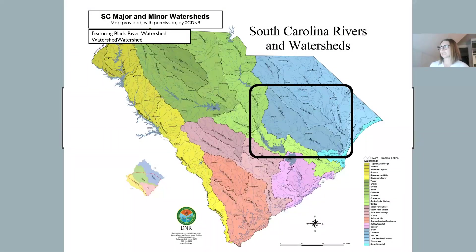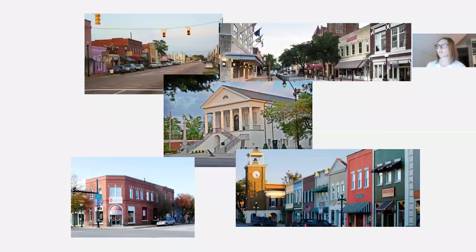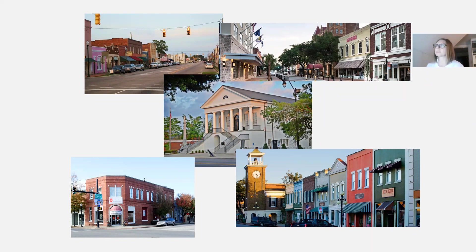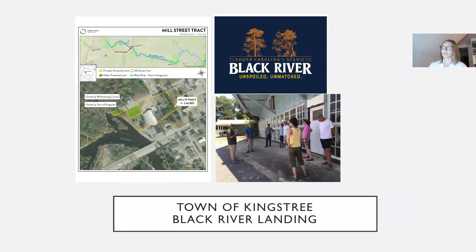This map shows where the Black River is located in the state. Our project extends between Kingstree and the Rocky Point community. There are several communities along this corridor, and it was very important that we stayed connected to those communities — Kingstree, Andrews, the Choppy community, and people in northern Georgetown County and Williamsburg County — to make sure their voice was heard throughout this process.